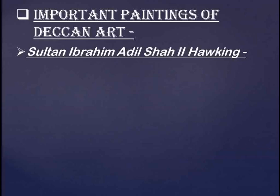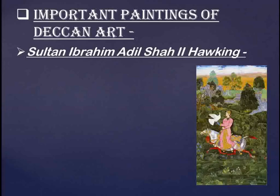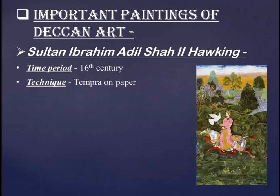The first painting is Sultan Ibrahim Adil Shah 2nd Hawking. The time period is the 16th century. The technique used is tempera on paper, and the sub-school is Bijapur style — meaning this painting belongs to the Bijapur style of Deccan Art.